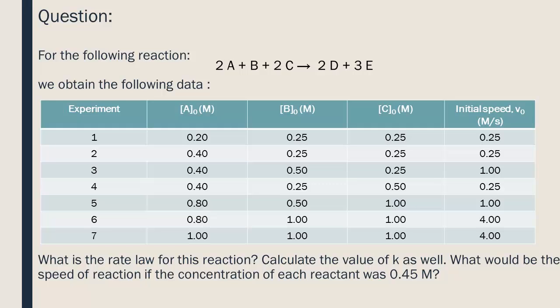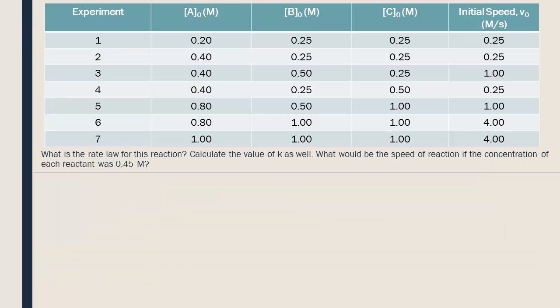What is the rate law for this reaction? Calculate the value of k as well. What would the speed of reaction be if the concentration of each reactant was 0.45 moles per liter? The initial concentration of each reactant is given with the corresponding initial speeds. The reaction was done 7 times with different concentrations and the results were put in this table.